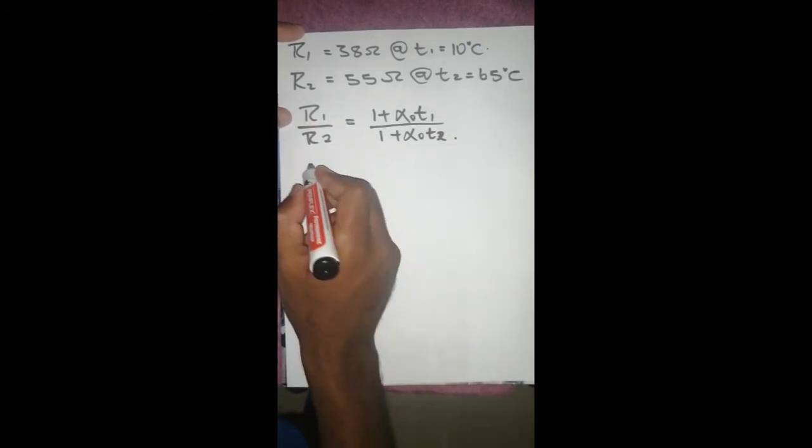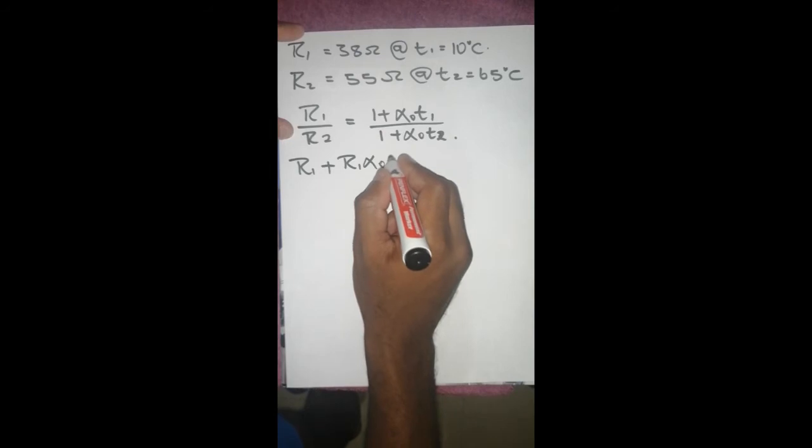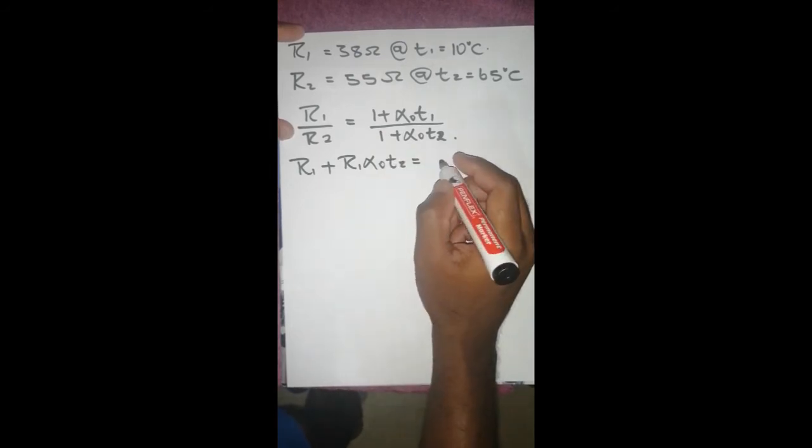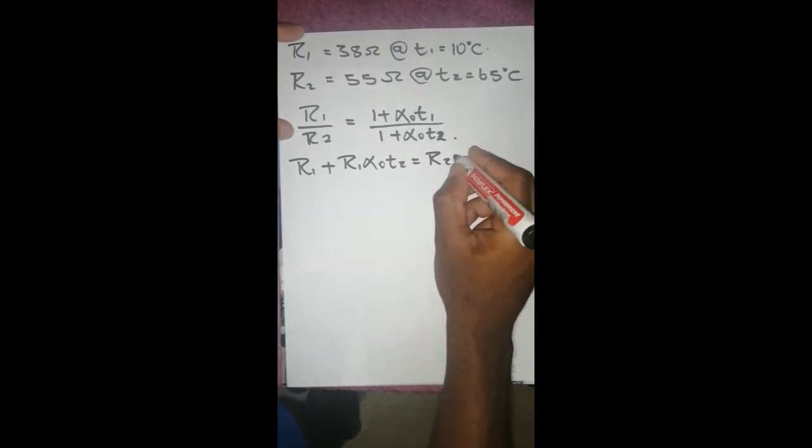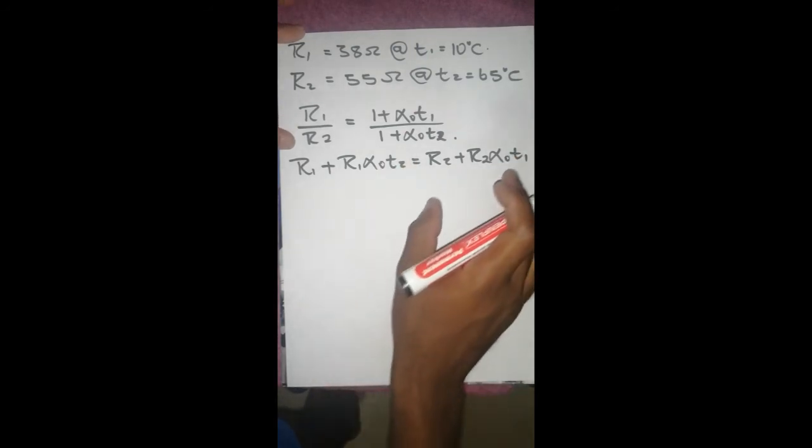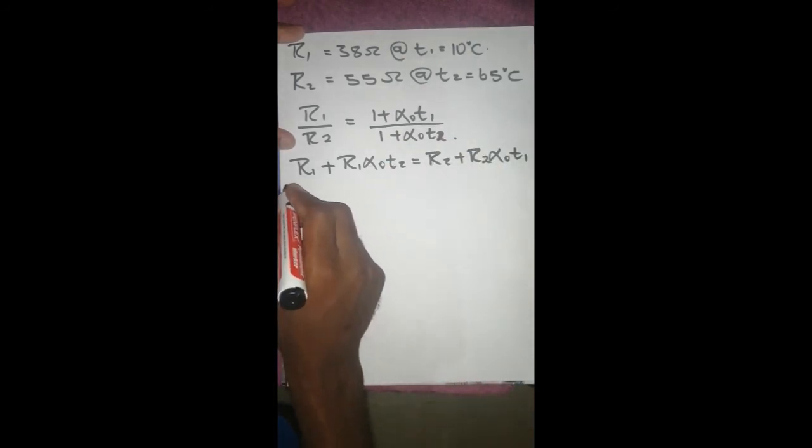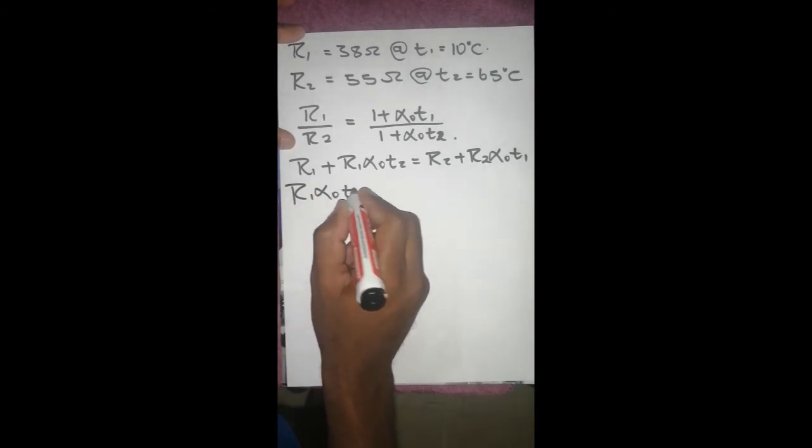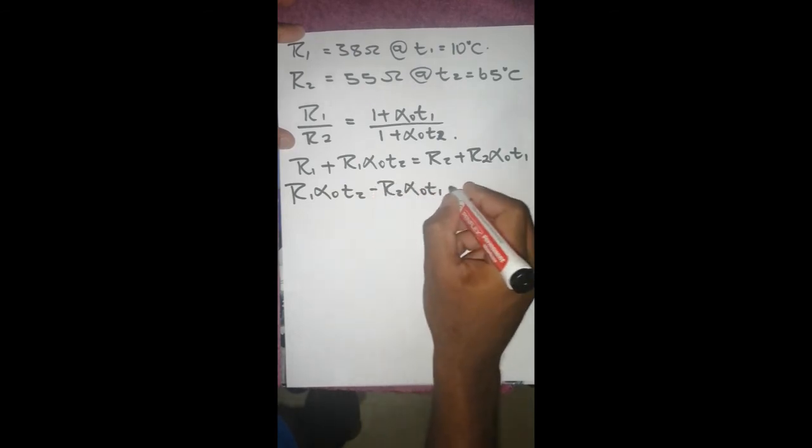So to get alpha we are going to cross multiply. So R1 plus R1 alpha zero T2 equals to R2 plus R2 alpha zero T1. And then we take all the terms with alpha to the right hand side and the rest to the left hand side. So it's going to be R1 alpha T2 minus R2 alpha T1 equals to R2 minus R1.